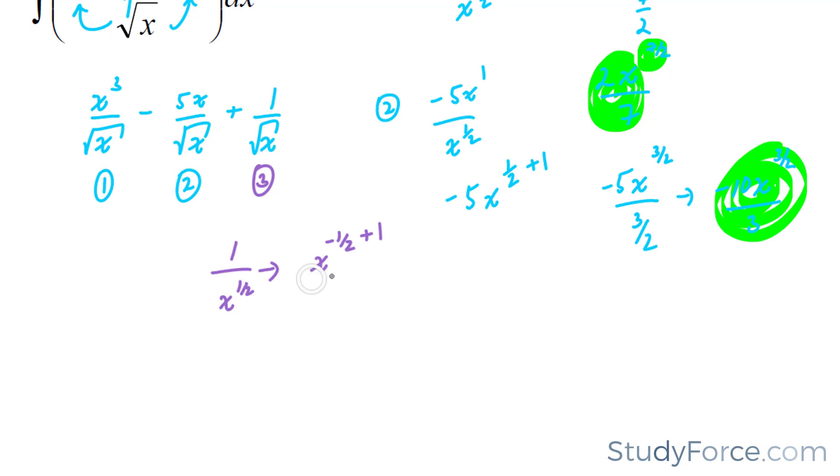find out what that is equal to, and divide the whole term by that. So, negative half plus 1 is equal to x to the power of half over 1 over 2. And this becomes 2x to the power of half.